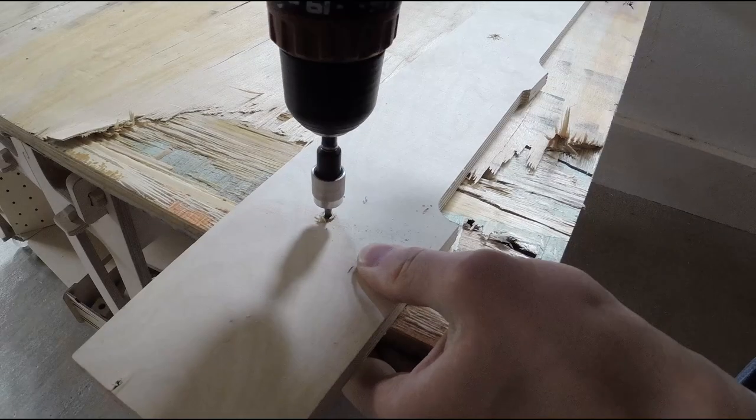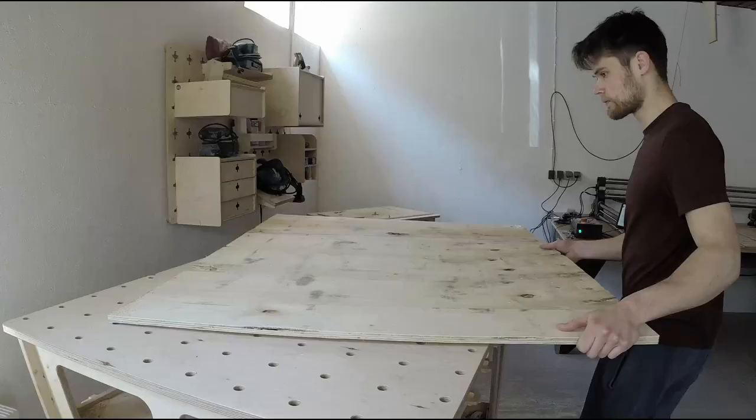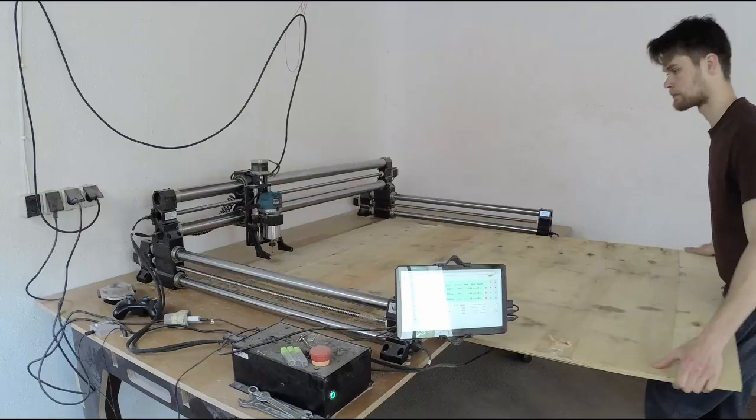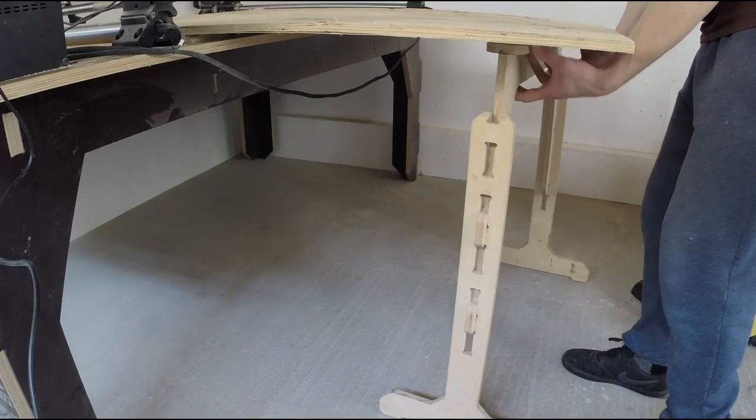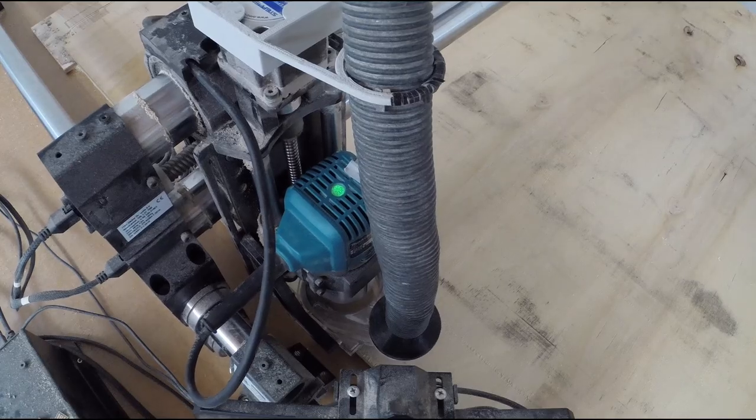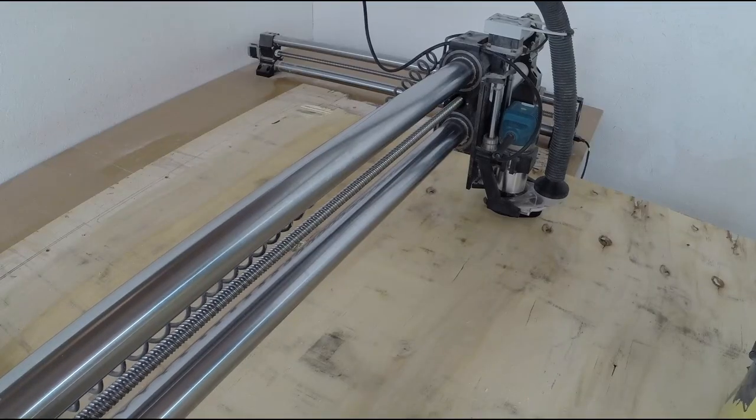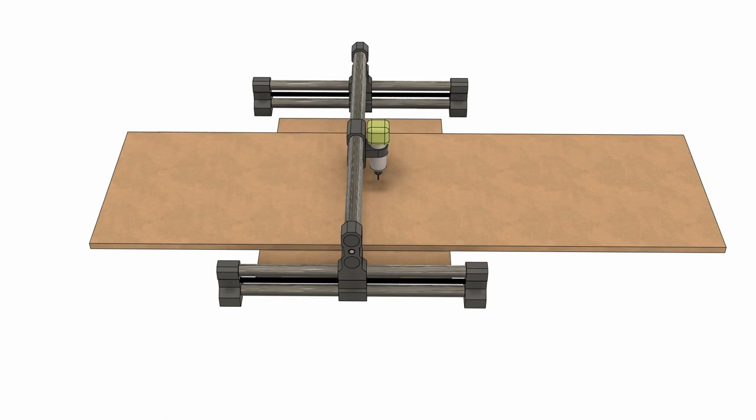However, the sheet that I was left with after the circular saw cuts was still too big to fit on our CNC router. Luckily for us, there is an approach called tiling that allows you to cut bigger components on your CNC router than the table's work surface. The idea of this approach is simple.